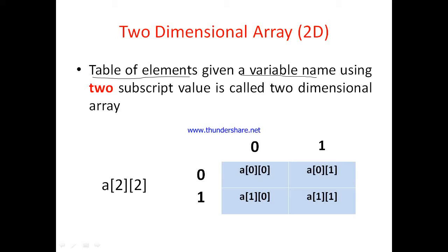Variable name is single but given by two subscript values. Two subscript values means one value is row and one value is column, which is called a two-dimensional array. Table of elements given a variable name using two subscript values is called a two-dimensional array.